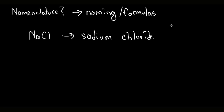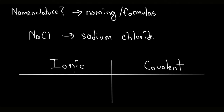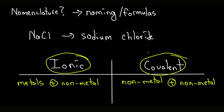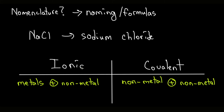Today we're going to discuss two types of naming. Inorganic nomenclature is going to be split between ionic bonding and covalent bonding. As we discussed previously, ionic bonds are going to be between metals and non-metals, and covalent bonds are going to be between two non-metals. The nomenclature is going to be different between ionic and covalent compounds, so we need to understand the difference.